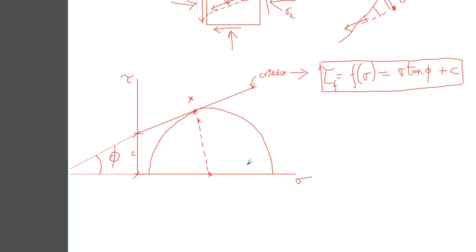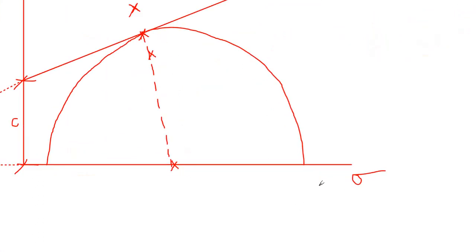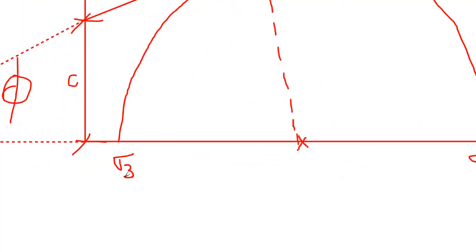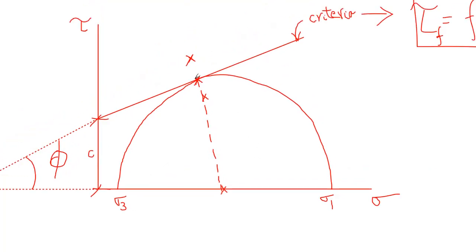Now, what we want to do is go back to our Mohr circle here, and we can say these are our principal stresses - sigma 1, sigma 3 - and let's say failure occurs at angle 2 theta.